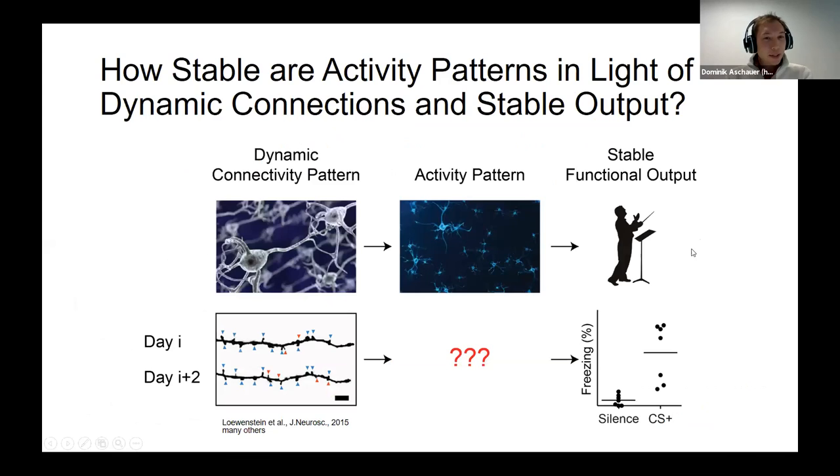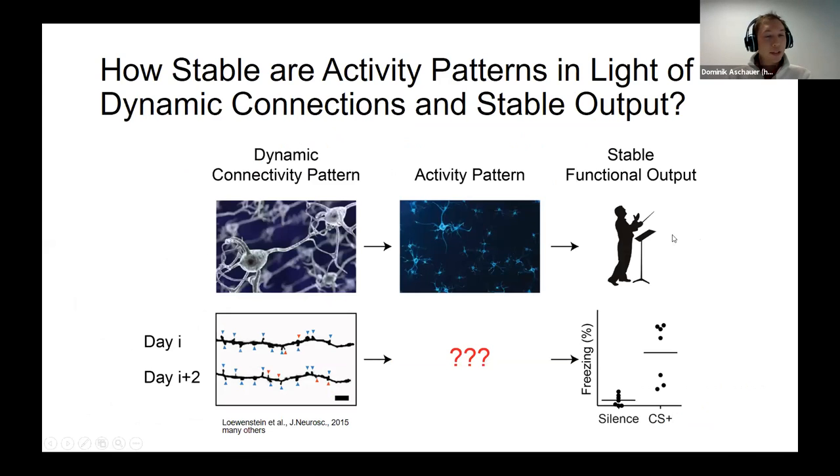So the main question I would like to address here is trying to bridge the observations that synaptic connections between neuronal networks of cortical neurons are highly dynamic, even on the baseline conditions when there is no behavioral training, while behavioral output can be highly stable over time. As an example here, where we show freezing levels to an auditory stimulus after fear conditioning, which can be maintained for very long time scales. It's clear that neural activity patterns in these dynamic networks are responsible for driving these behaviors, but little is known about their long-term functional properties.